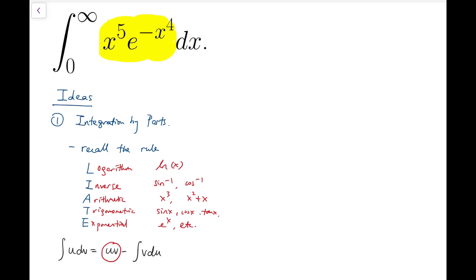So the rule is you should pick logarithm functions as u at a higher priority over the other four kinds of functions, following this direction. If the function is high in this list, then that should take a higher priority in being chosen as u. Let's take this x to the 5 times e to the minus x to the 4 as an example. Because x to the 5 is an arithmetic function, it's a polynomial, you should pick this as u at a higher priority over the exponential function e to the minus x to the 4.